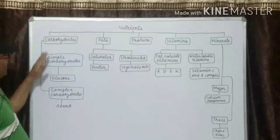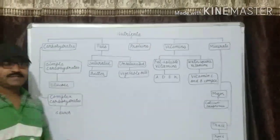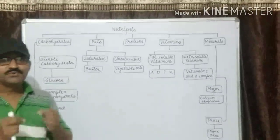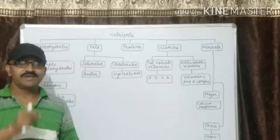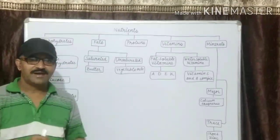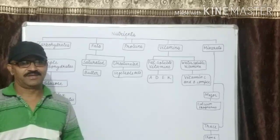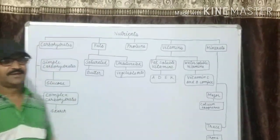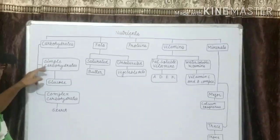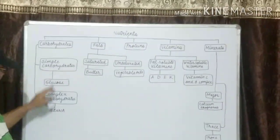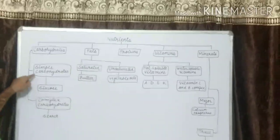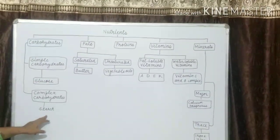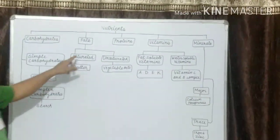First of all, we discuss carbohydrates. Carbohydrates are as important to our body as fuel is to a car. Just like fuel makes a car run, carbohydrates provide energy to our body, which keeps it going. Carbohydrates are two types: one is simple carbohydrates, second is complex carbohydrates. Simple carbohydrates example glucose, and complex carbohydrates example starch.